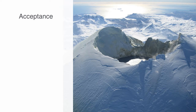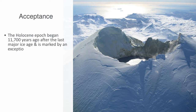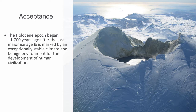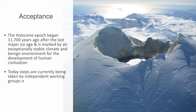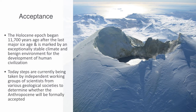According to the International Union of Geological Scientists — the professional organization in charge of defining Earth time scales — we are officially in the Holocene epoch, which began approximately 12,000 years ago after the last major ice age. It is marked by an exceptionally stable climate and benign environment for the development of human civilization. However, some experts say this label is outdated and argue for the term Anthropocene, and steps are currently being undertaken by working groups of scientists to determine whether the Anthropocene will be formally accepted into the geological time scale.